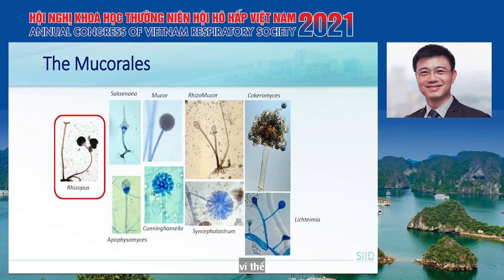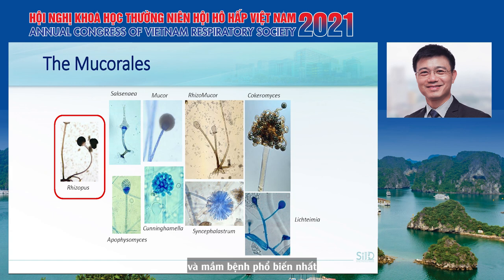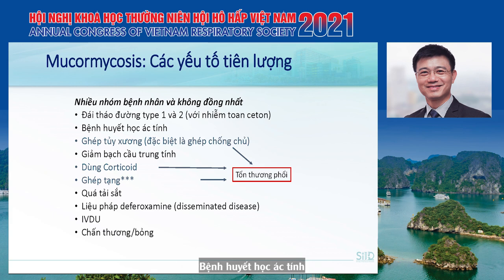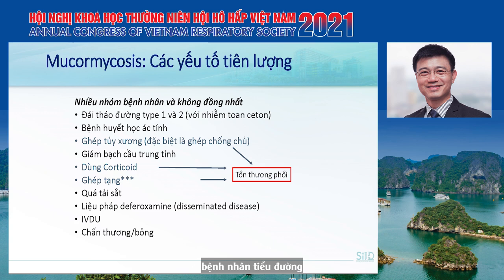There are about 9 to 10 genera of Mucorales that can cause mucormycosis, and the most common pathogen is Rhizopus. Predisposing factors include diabetes, hematologic malignancy, bone marrow transplant, and neutropenia. The three risk factors most associated with pulmonary mucormycosis are bone marrow transplantation, corticosteroid use, and solid organ transplantation. Patients with diabetes are most likely to develop rhinocerebral mucormycosis.